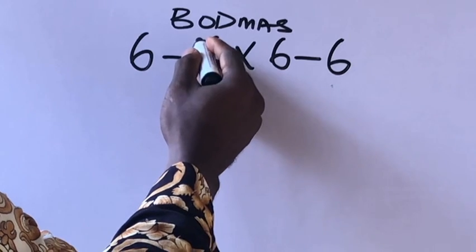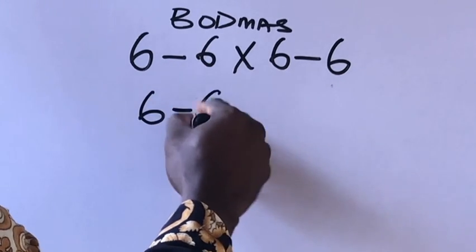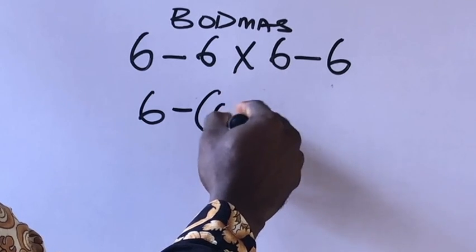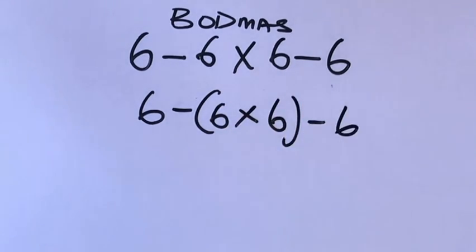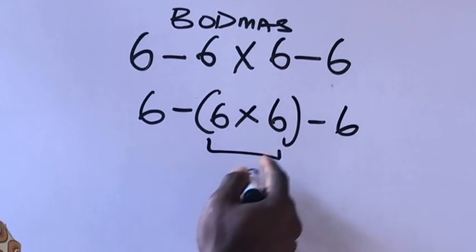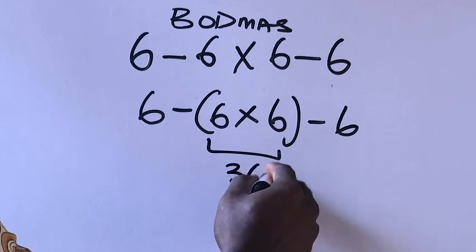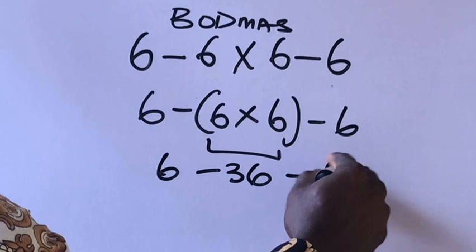We have minus six. Let's rewrite this like this: six minus six times six minus six. Six times six will give us what? 36. And we write minus six here, minus six.